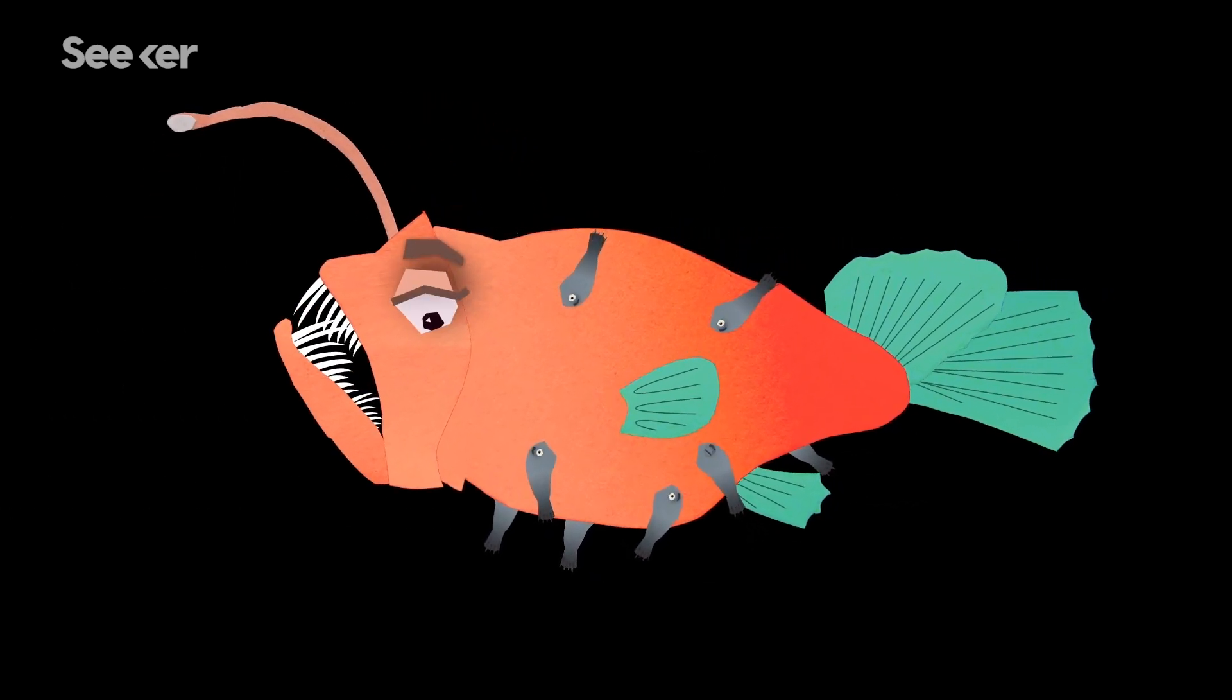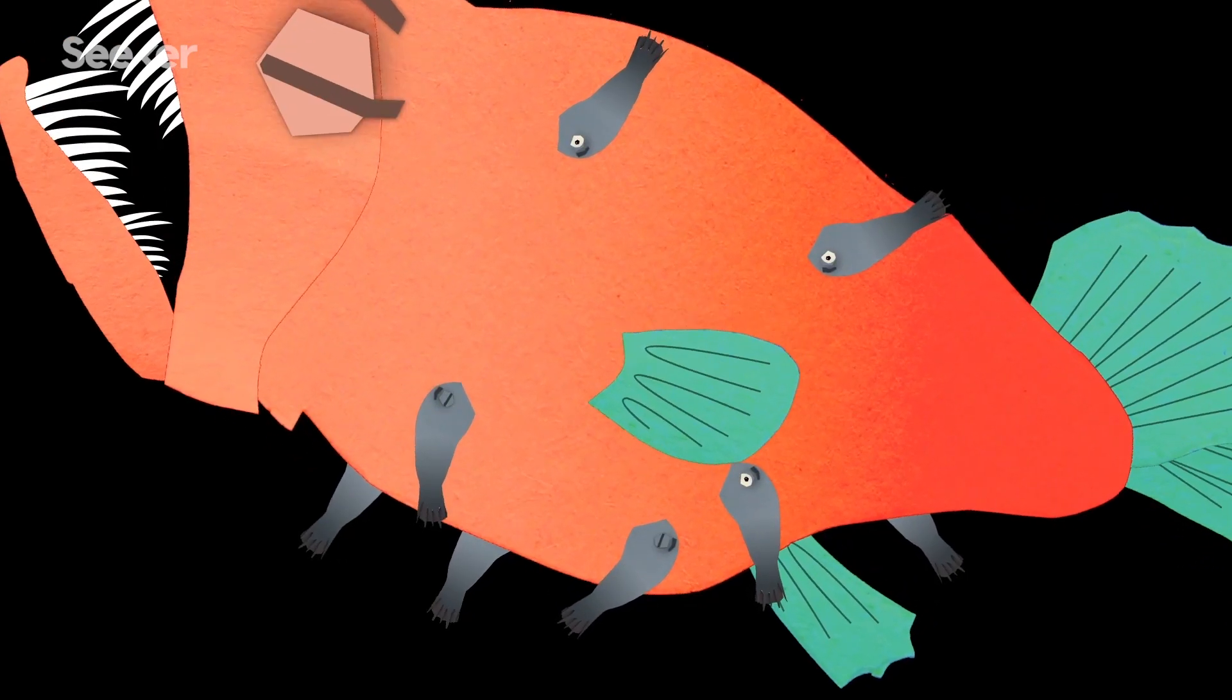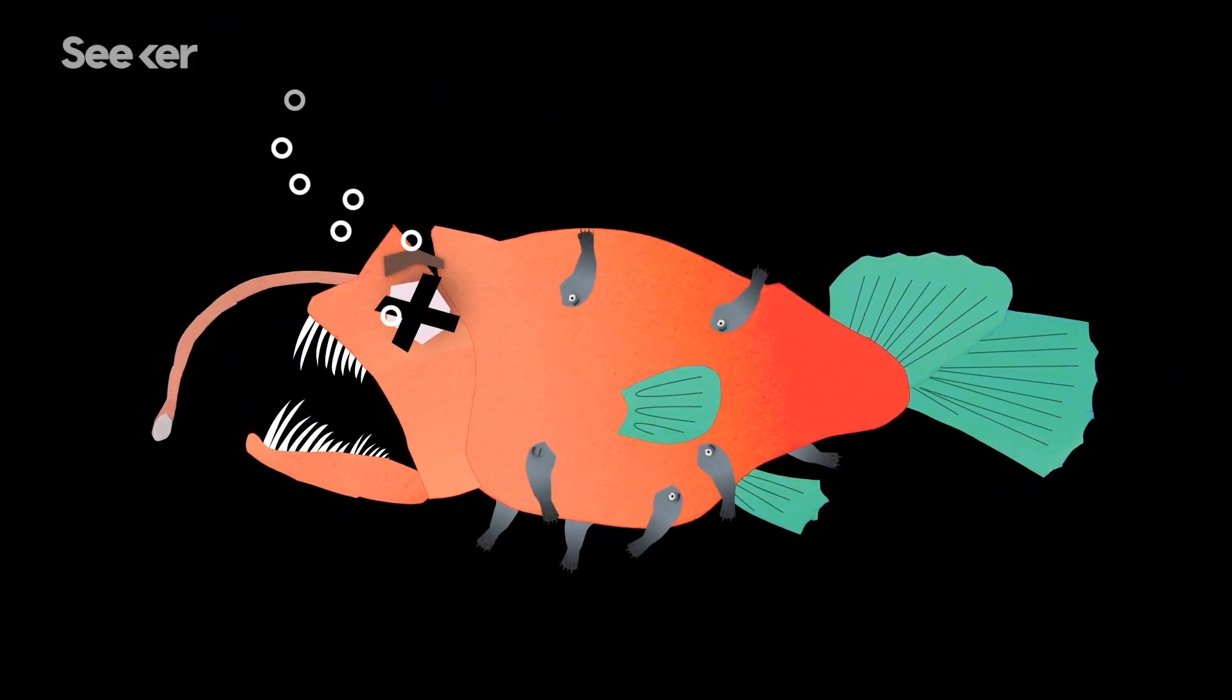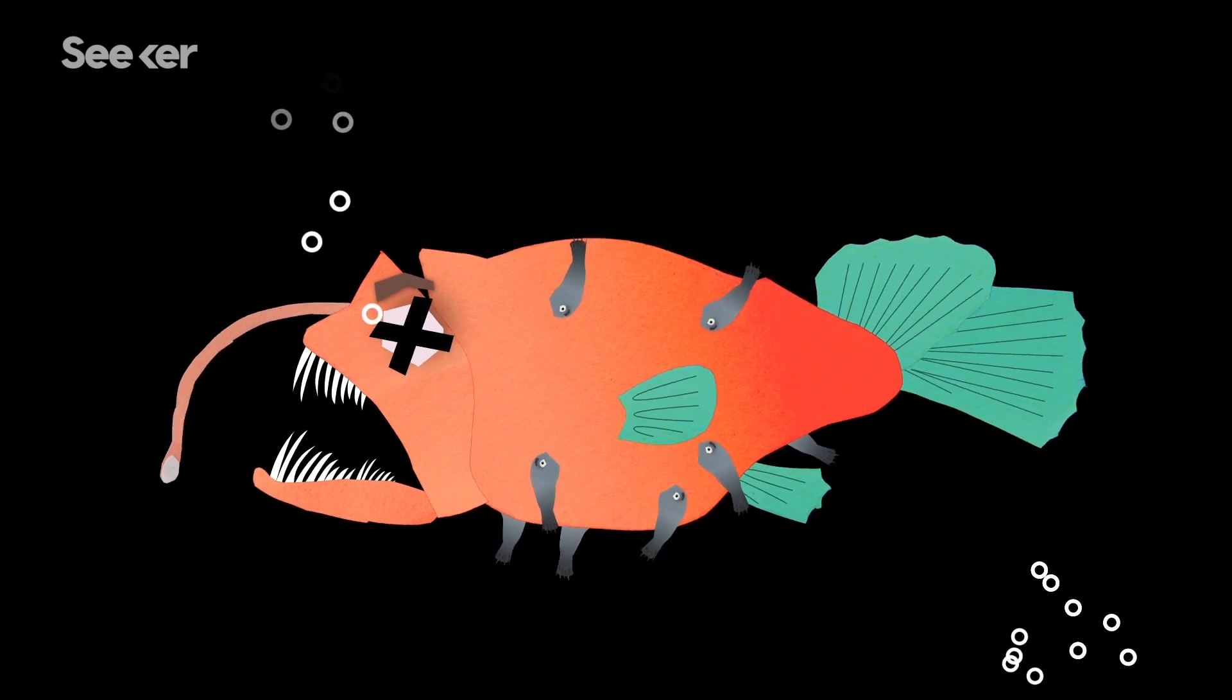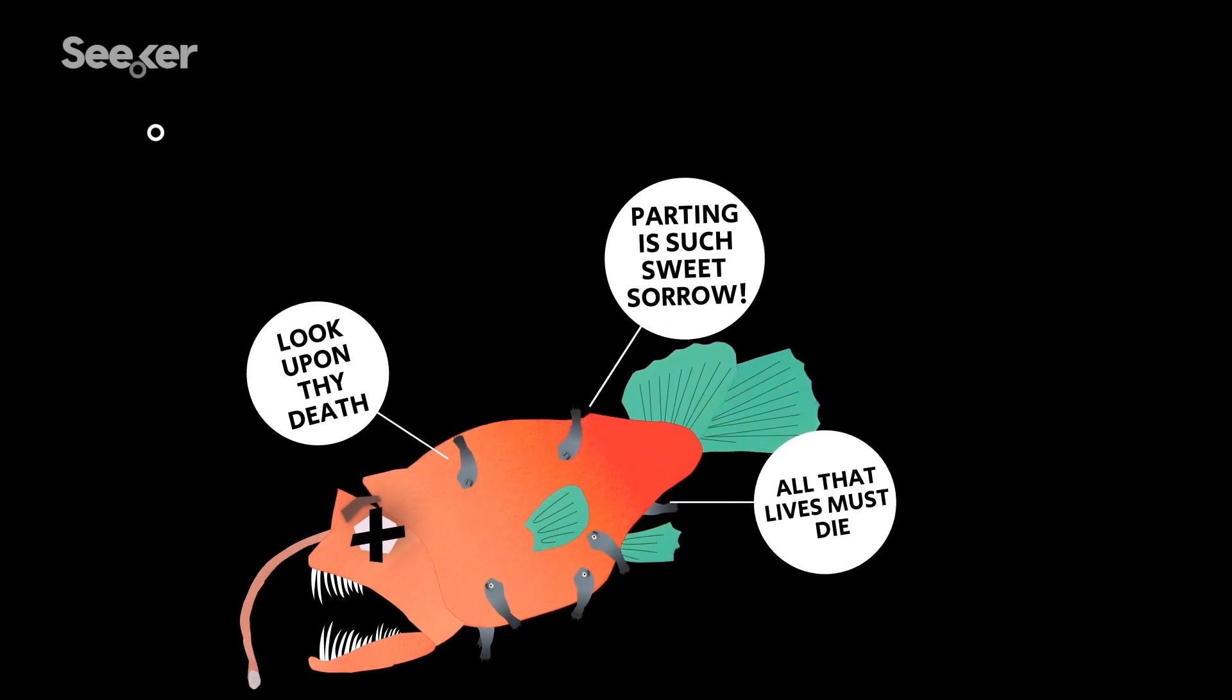Male anglerfish can live a long and happy life. That is, until their sugar mama dies, and then they'll follow shortly after, which is, I guess, romantic in a dark Shakespearean kind of way.